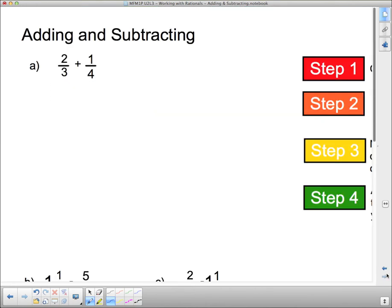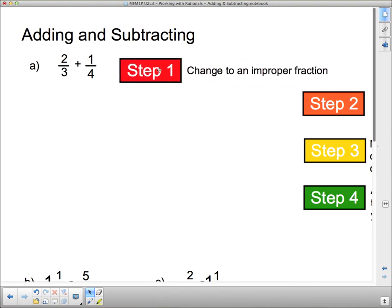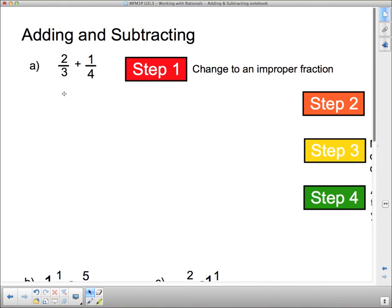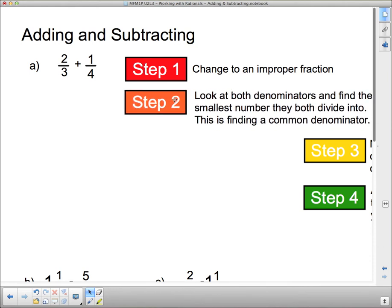So that's just a rough working of why this works. Now we're going to actually do a couple of questions of adding and subtracting. Step 1 says change to an improper fraction if you have to. In this case, there is nothing to change. Step 2: Look at both denominators and find the smallest number they both divide into. This is finding a common denominator. So what's the smallest number that both 3 and 4 go into?